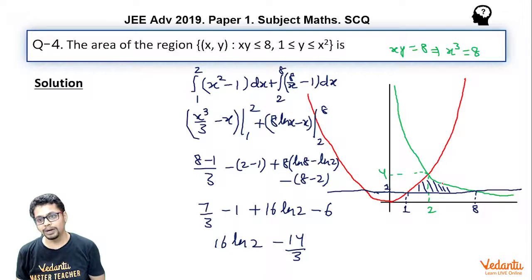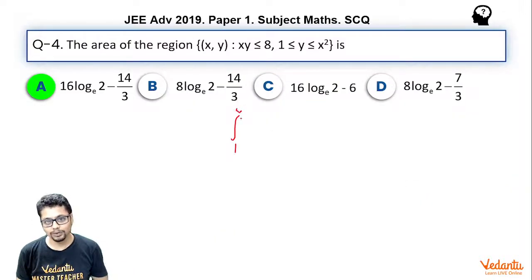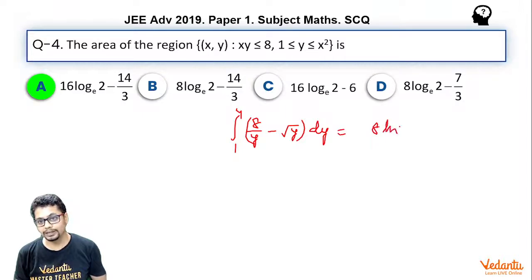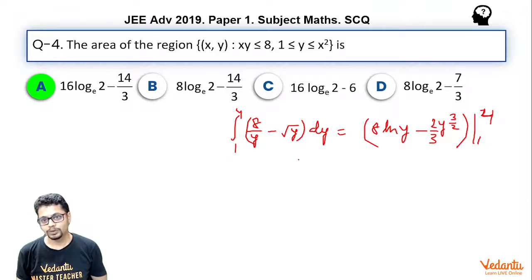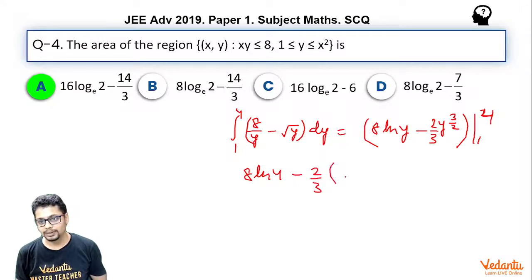So basically it becomes 8/y - √y integrated from 1 to 4. Let's do it: integral 1 to 4, 8/y - √y dy. So essentially it becomes 8 ln y - y^(3/2) divided by 3/2, or multiplied by 2/3, from 1 to 4. So it essentially becomes 8 ln 4 - 8 ln 1, ln 1 is 0, minus 2/3 × 4^(3/2), which essentially becomes 8 minus 1^(3/2). So essentially it becomes 8 ln 4, which you may say is 16 ln 2, minus 2/3 times 7, which is 14/3. So again A is the answer.